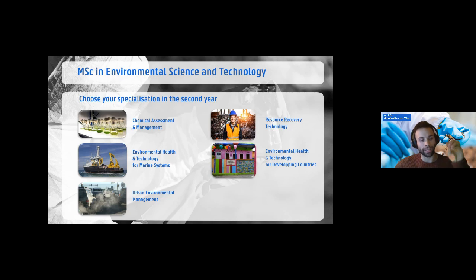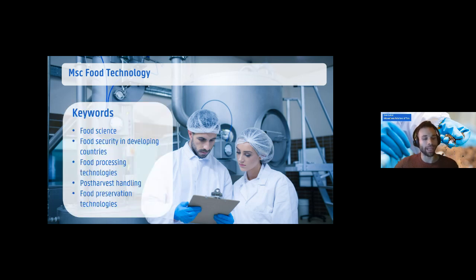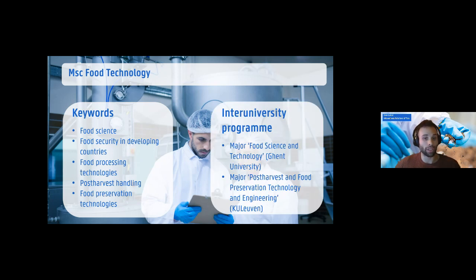These three programs are offered at Ghent University alone. The next program, Food Technology, is organized by Ghent University in collaboration with KU Leuven. It focuses on food science and food processing technology from an engineering standpoint. There are two majors: Food Science and Technology organized in Ghent, and Post-Harvest and Food Preservation Technology and Engineering at Leuven. All students, regardless of major, start in Ghent.